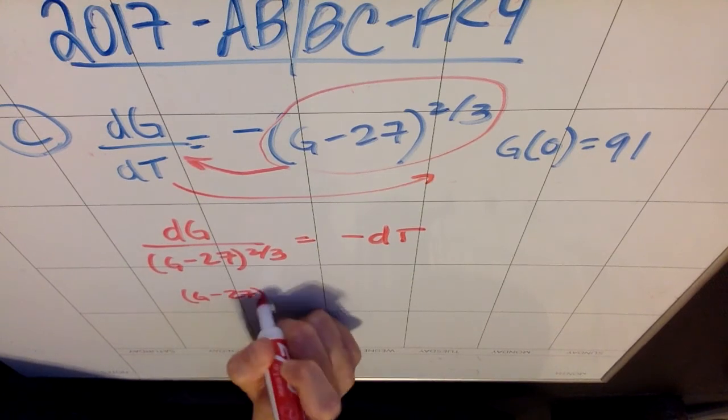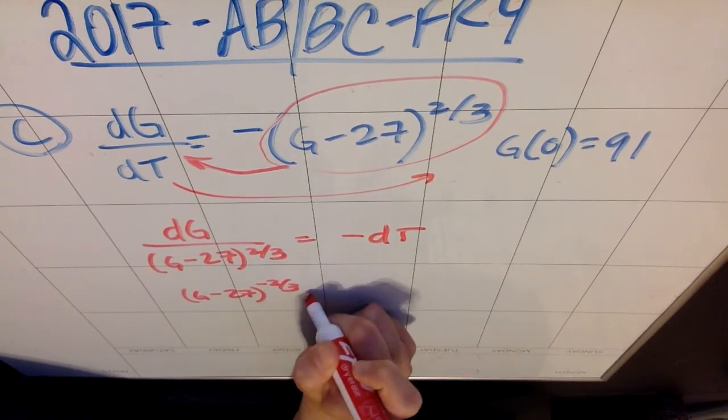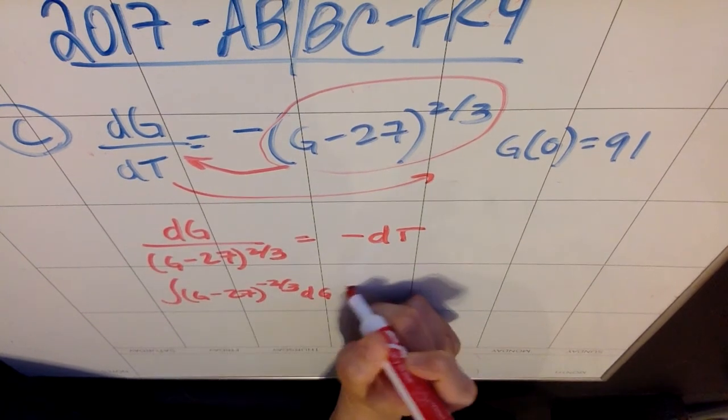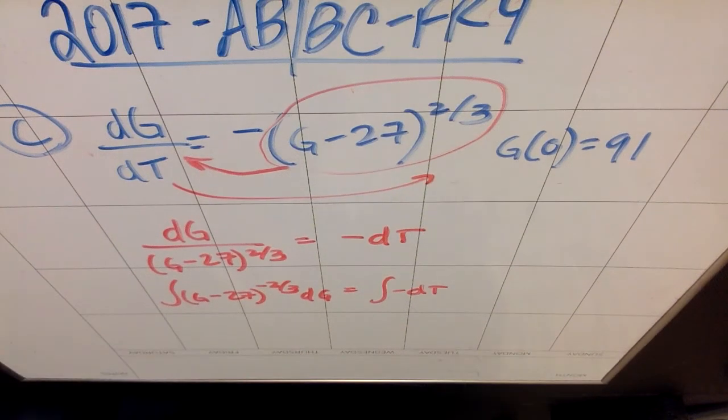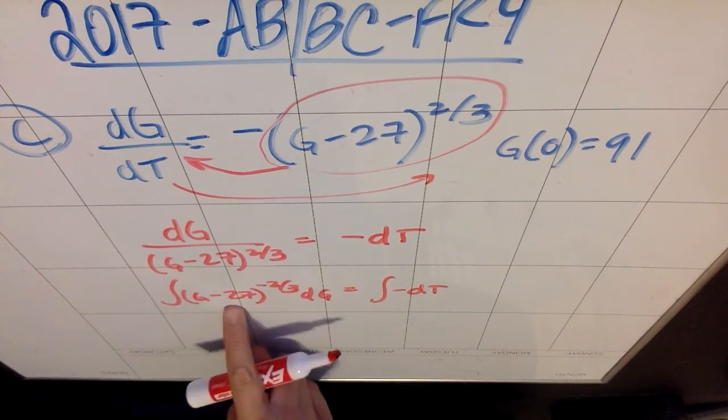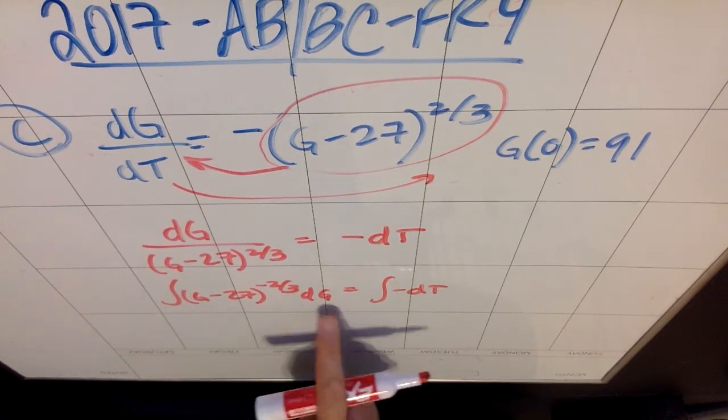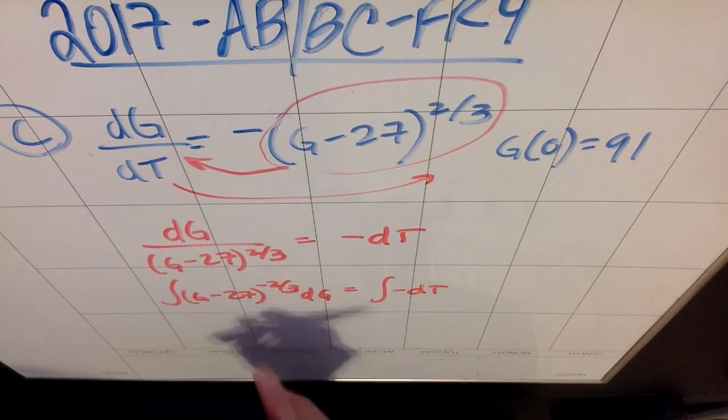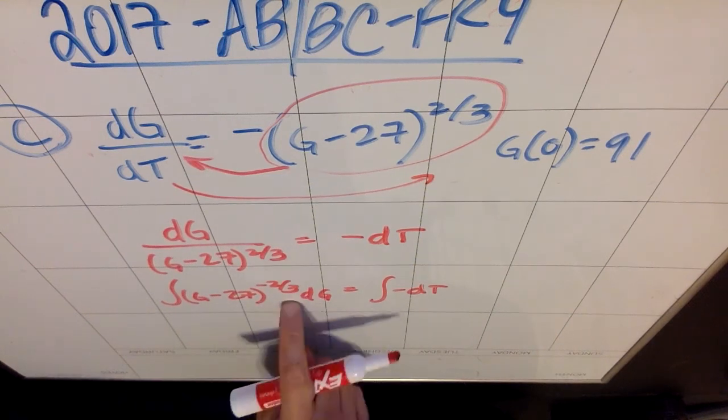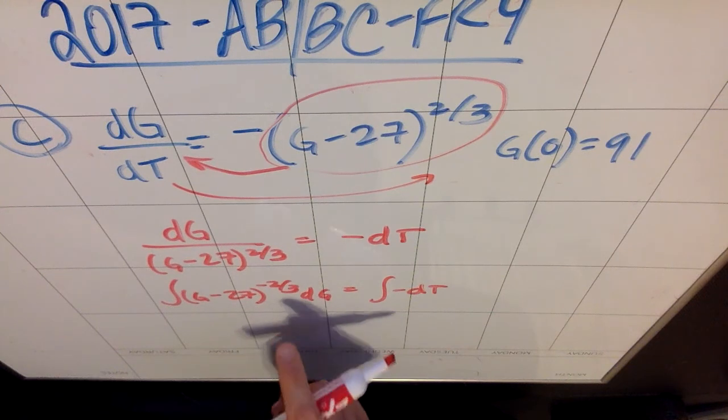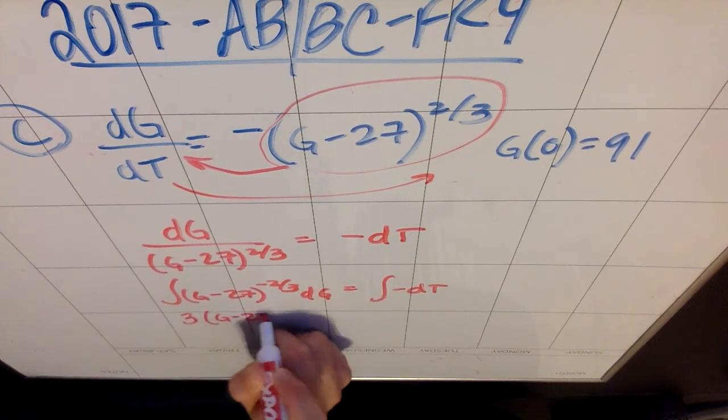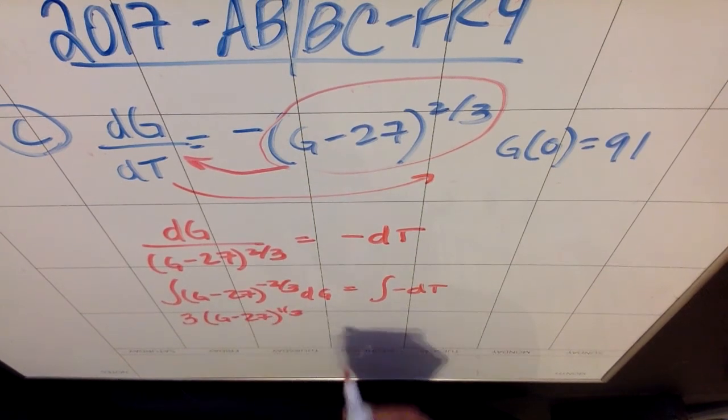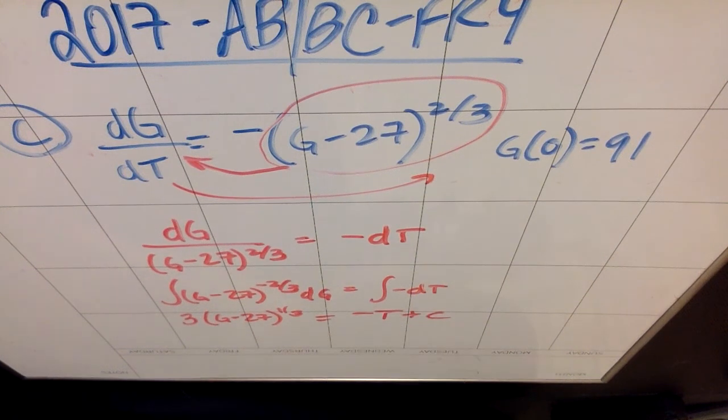This is actually to the negative 2/3. So when we integrate this guy, we're going to essentially just use u sub with the power rule. dG, and we're going to find the antiderivative. I chose to keep the negative with the t because it just seemed easier. When I integrate this side, technically it's u sub. My u is G minus 27. My du is just dG, so it's fine. So I'm going to up the power by one and divide by the new power. One more than negative 2/3 is a positive 1/3, and then divide by 1/3 would give you a 3. So you're going to get 3 times (G minus 27) to the 1/3 equals, on this side, I'm just going to get negative t plus c.